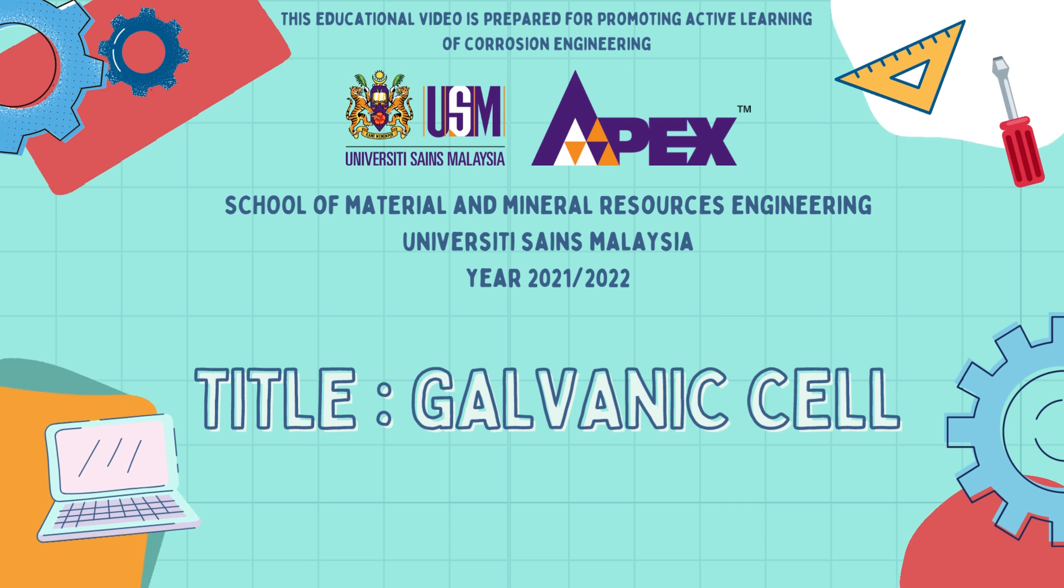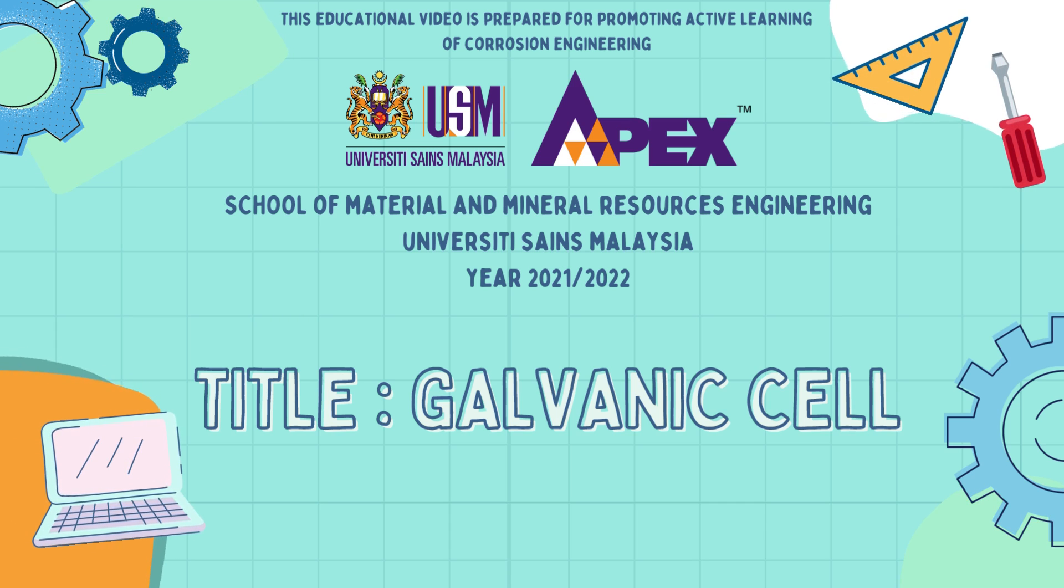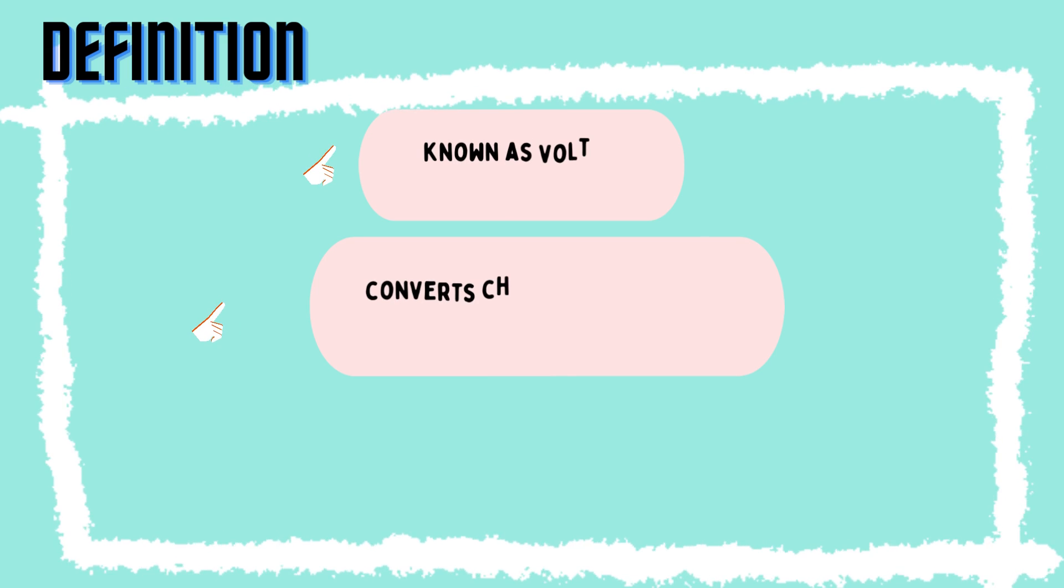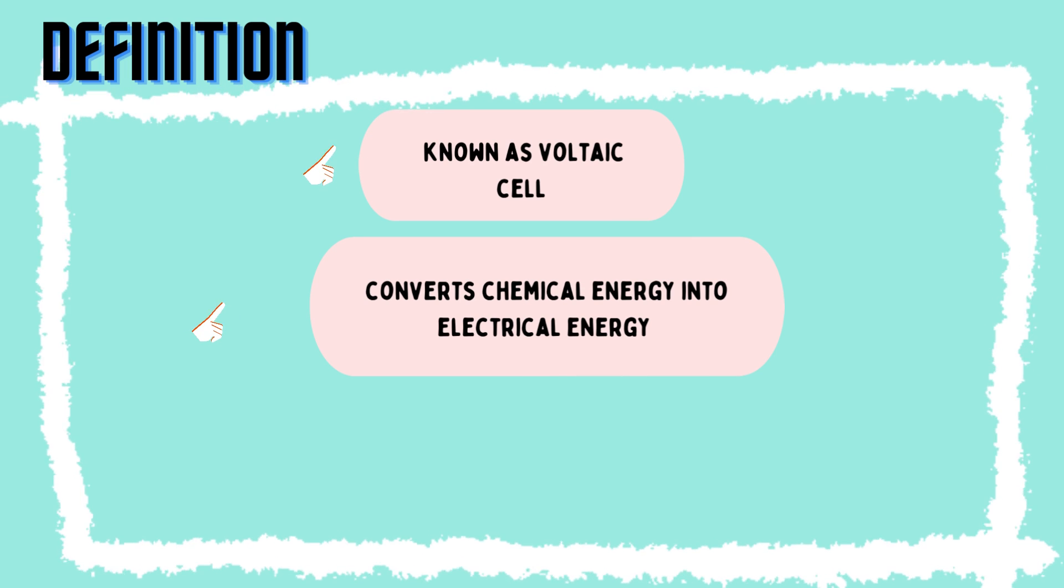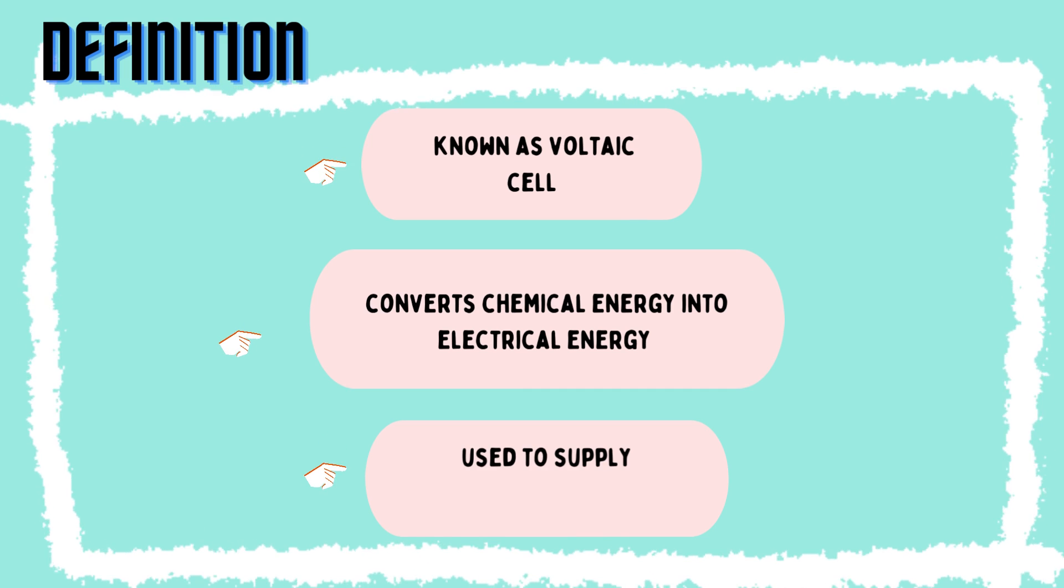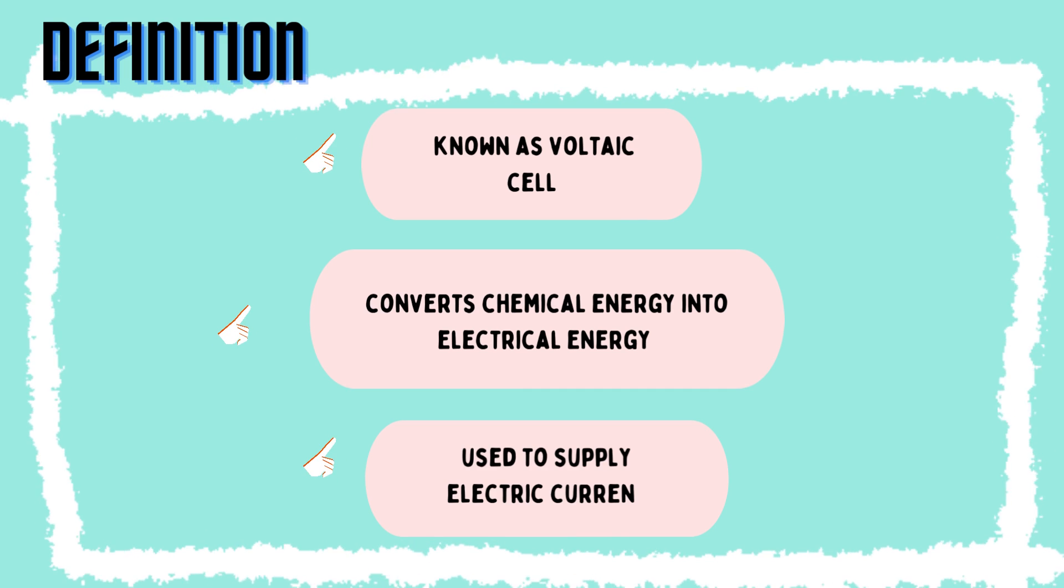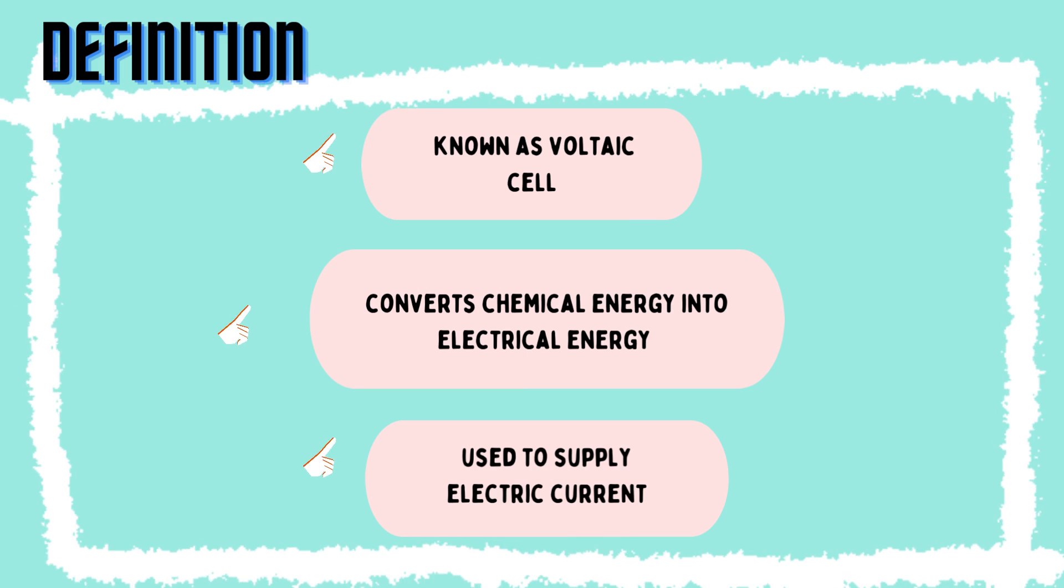This educational video is prepared for promoting active learning of corrosion engineering. A galvanic cell, which is also known as voltaic cell, is a type of electrochemical cell that converts chemical energy into electrical energy by using a spontaneous oxidation reduction reaction. To simplify, it is used to supply electric current by making the transfer of electrons through a redox reaction.